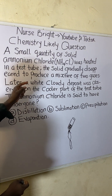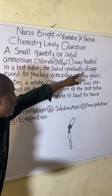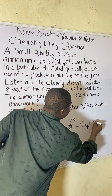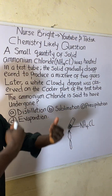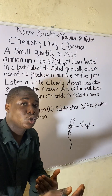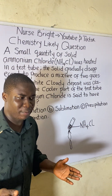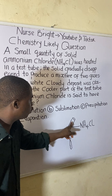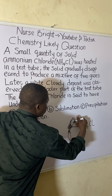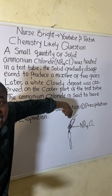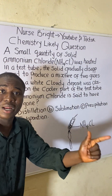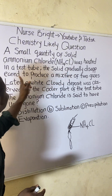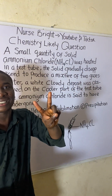Moving further, the solid compound NH4Cl - ammonium chloride - inside the test tube gradually disappeared. The compound was solid before, and when we started heating it with the flame, this solid gradually started disappearing from the test tube. The solid disappeared to produce a mixture of two gases.